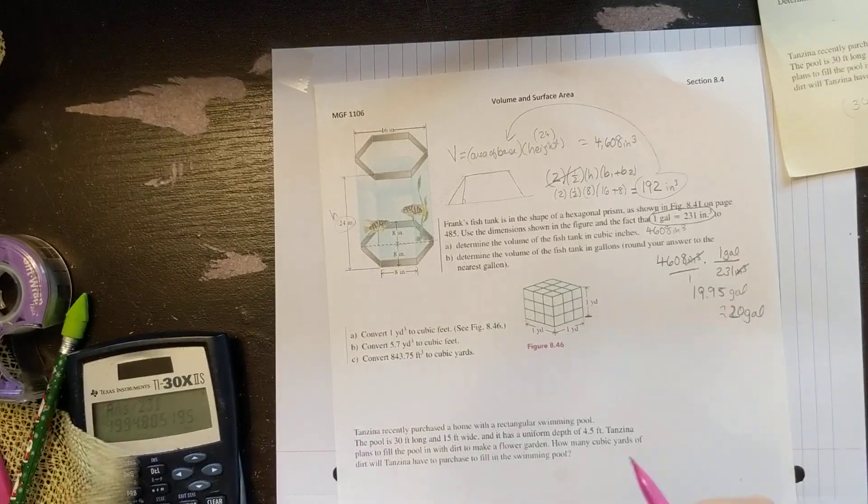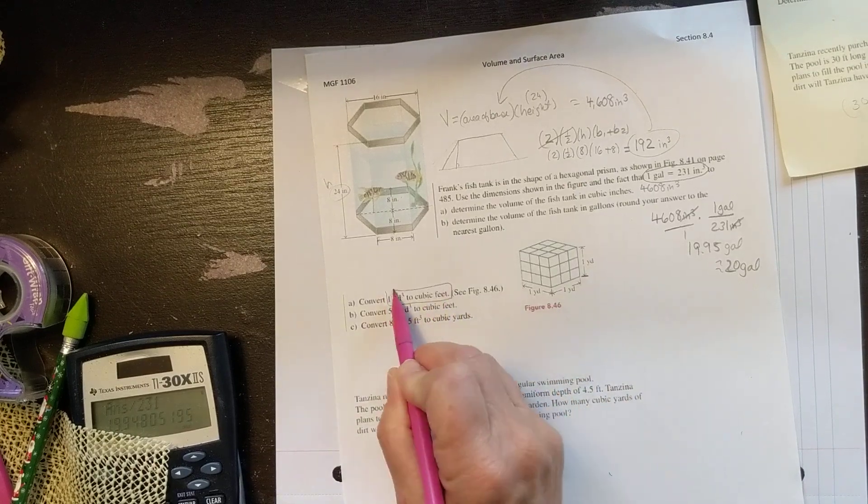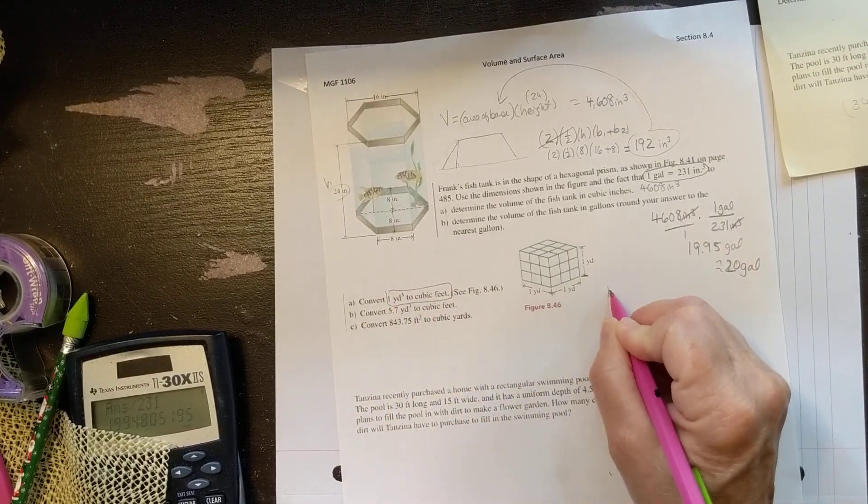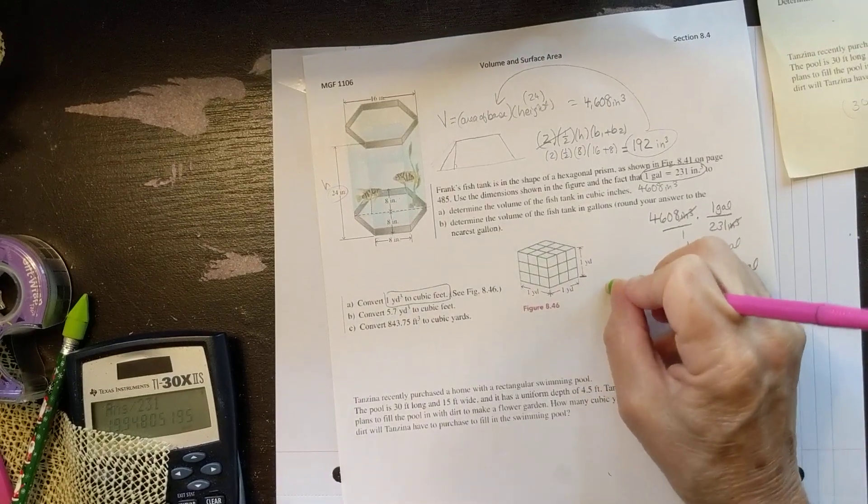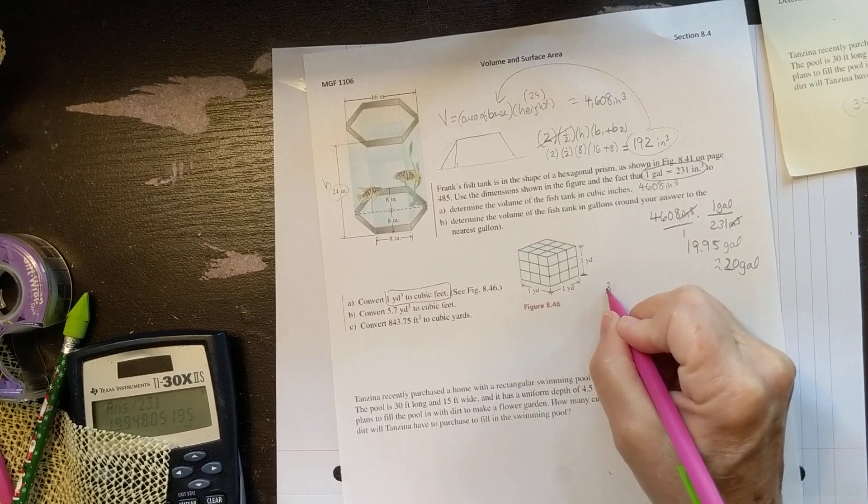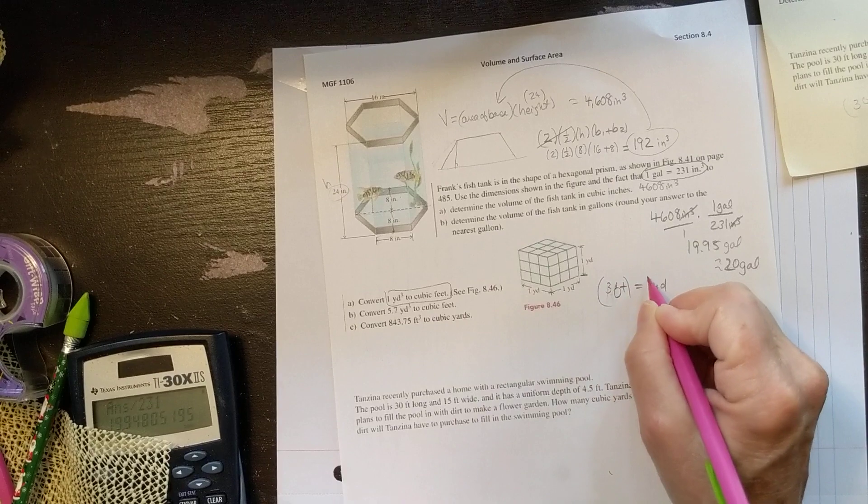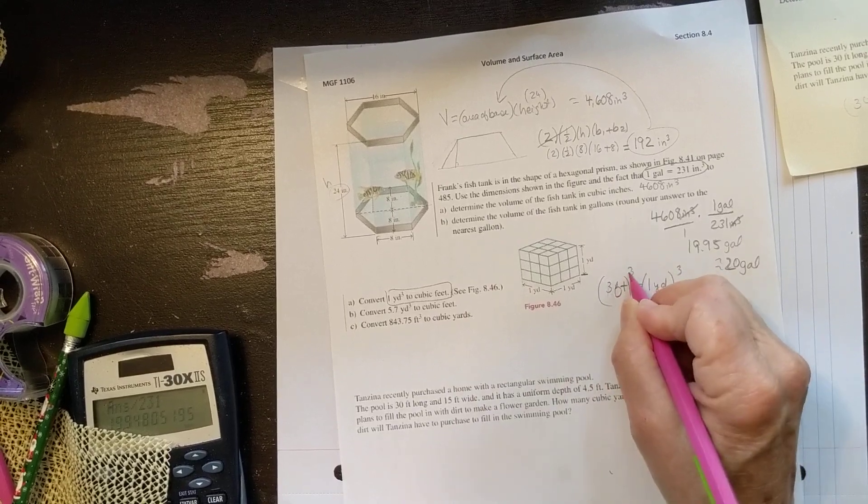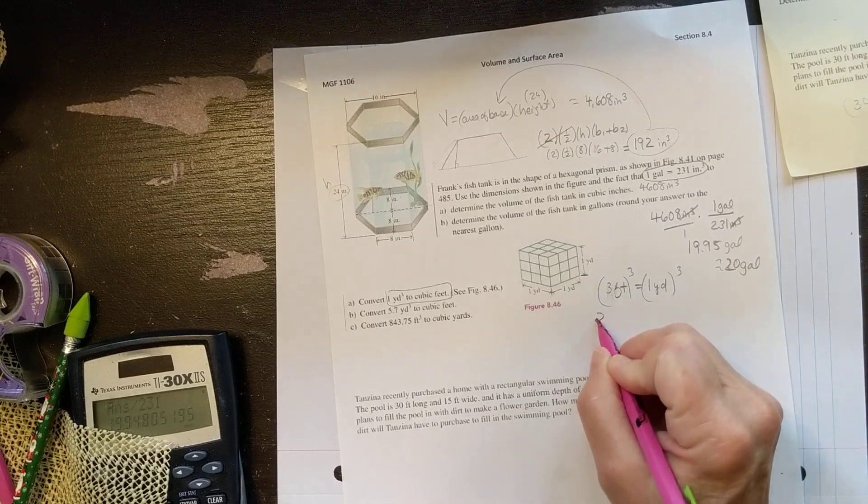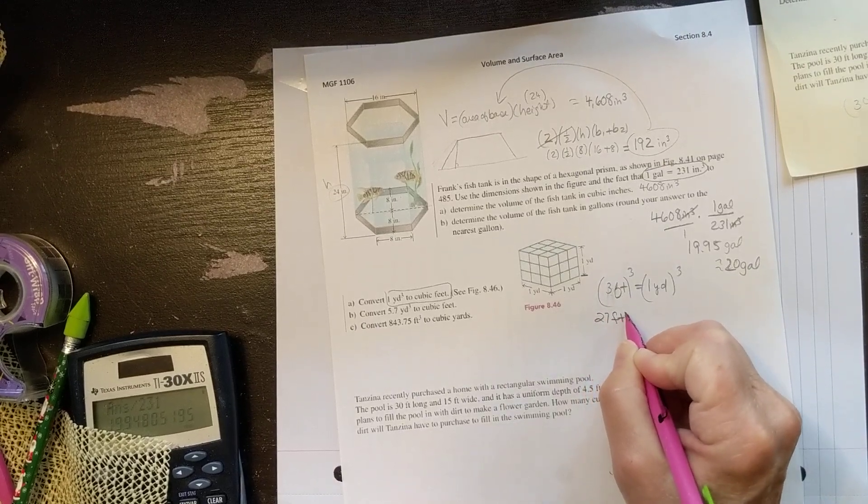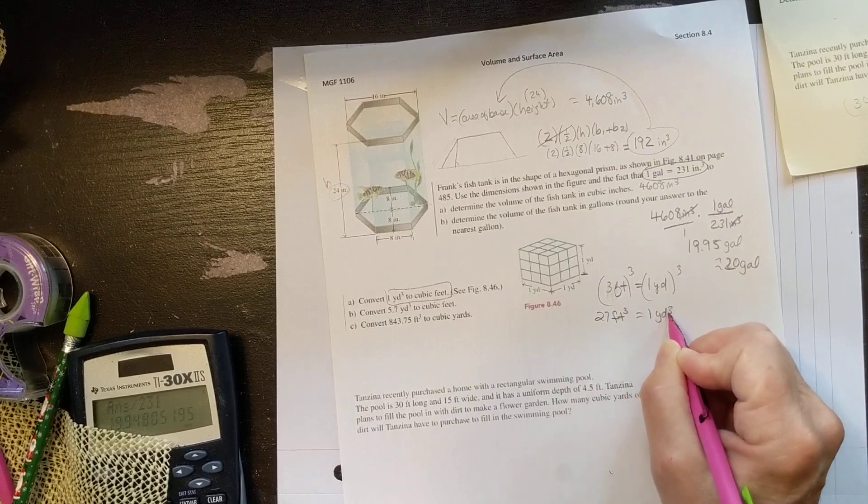Let's do some conversions. This is not that hard. There are 3 feet equal to 1 yard. So if I need to know how many cubic feet are in a cubic yard, I'm going to cube both sides of this. 3 times 3 times 3, or 3 cubed is 27. Feet times feet times feet is feet cubed, is equal to 1 yard cubed. This is A.